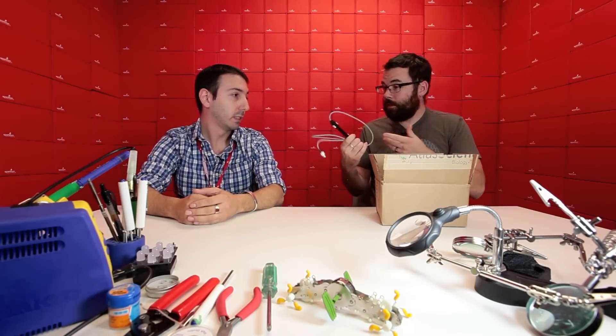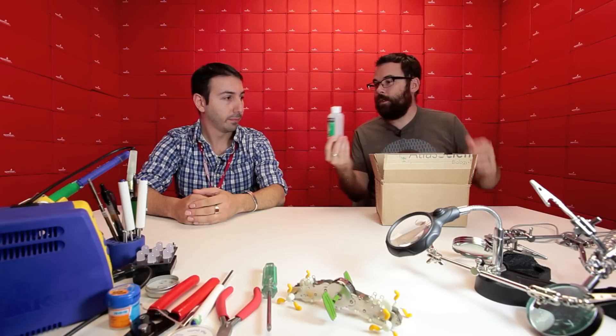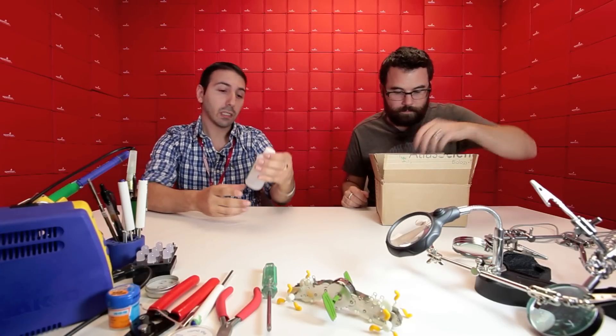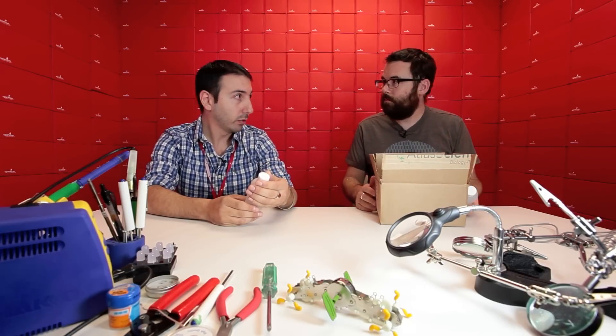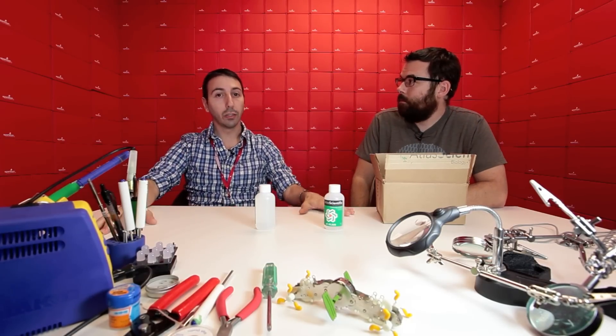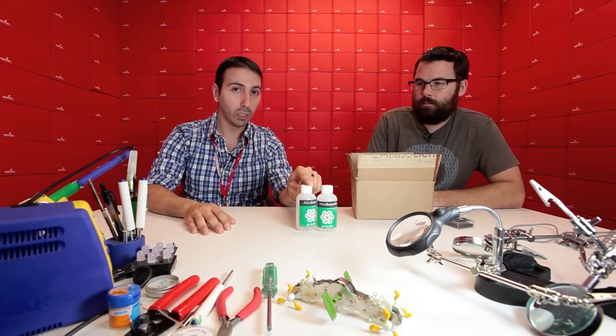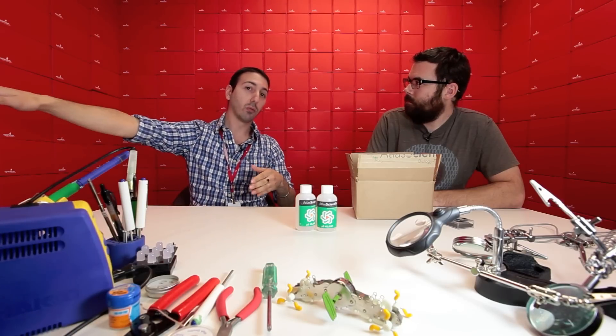So we've got this guy which is the probe, right, and then we've got these guys. Tell me what these are. Now these are calibration solutions. You need calibration solutions to give the sensor some points to understand where it is in the world. You just put the probe in, tell it what it's in, and then boom, it has a reference point.